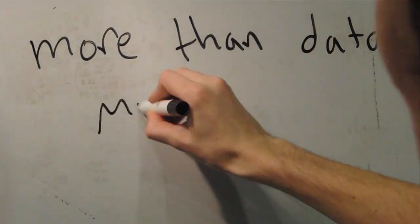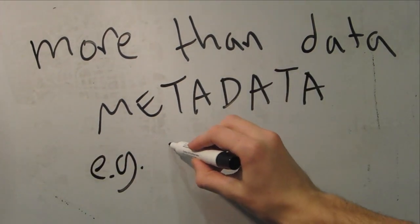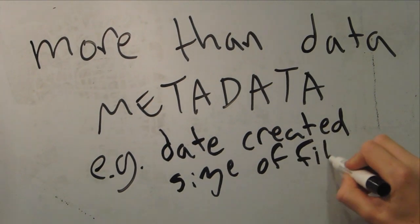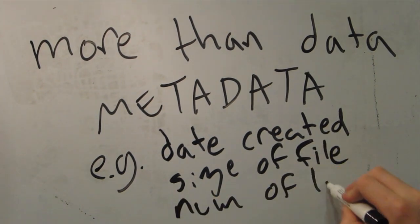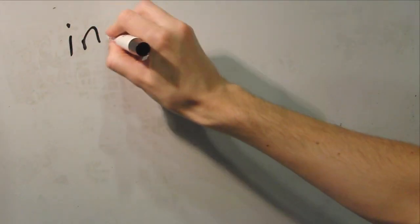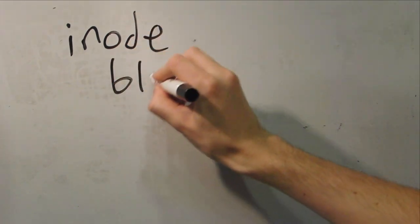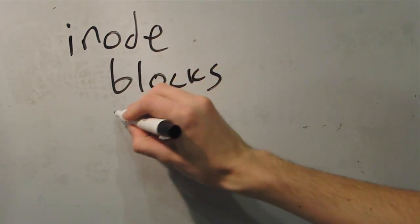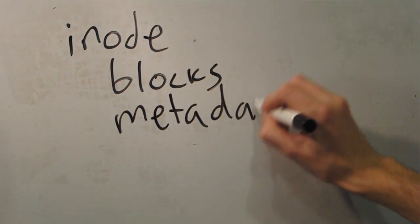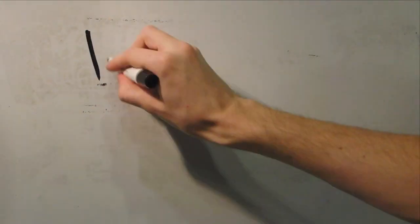An inode stores more than just data. For example, you might want to know when a file was created, what its size is, how many links there are to it, or who created the file. Each inode therefore has blocks and metadata. When you want to see the data of the file, the inode can tell you all the blocks that contain that data, or when you want to know more about the file itself, you can get the metadata.